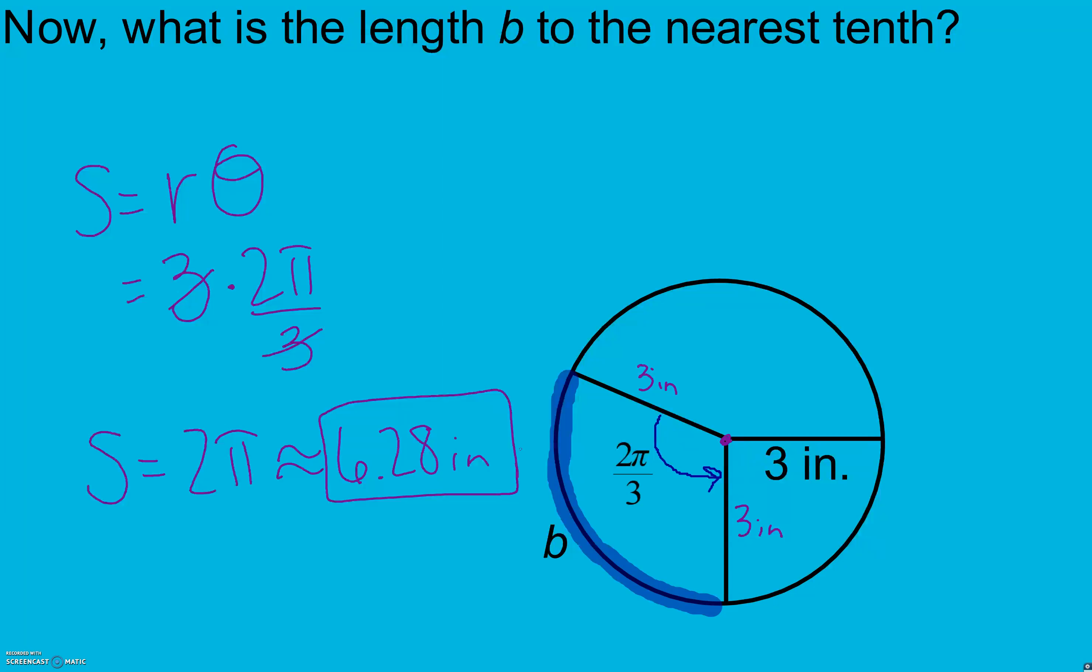But when our radius changes, remember that our radian measure is based off our radius. So right now, it's not a full circle because our radius is 3 instead of it being just a radius of 1, like in a unit circle. Don't get confused on that.